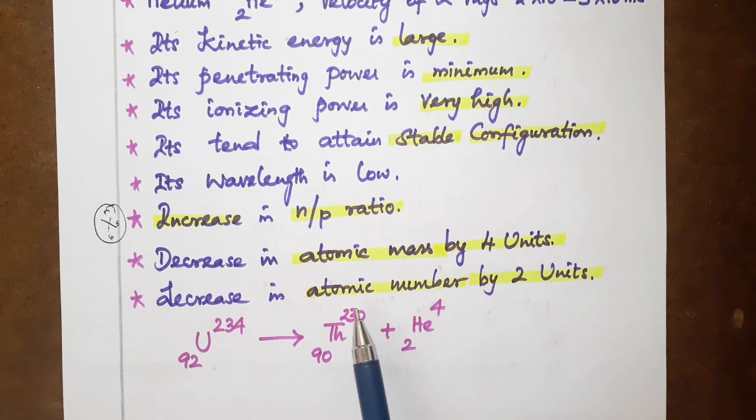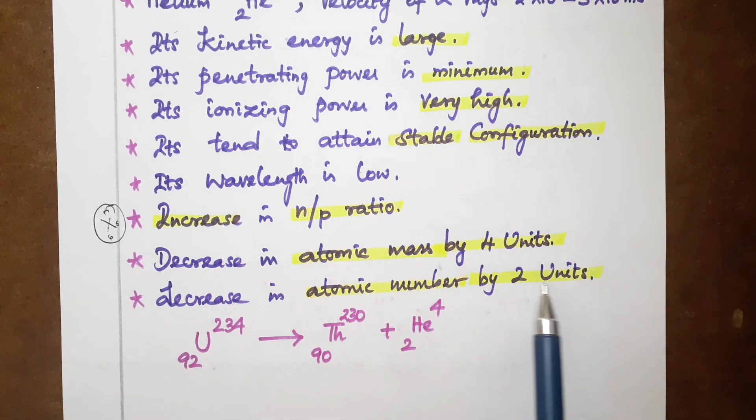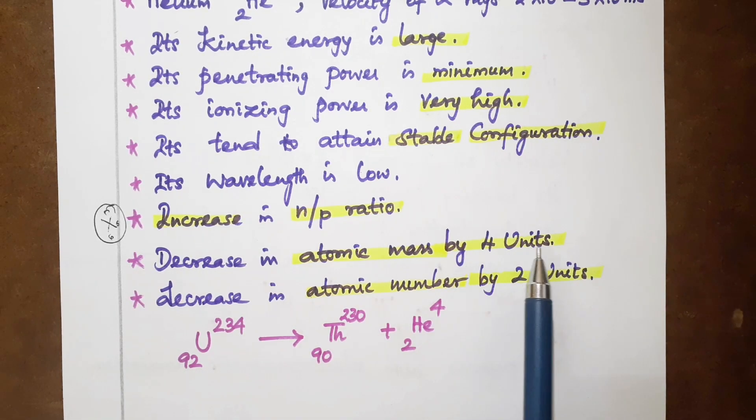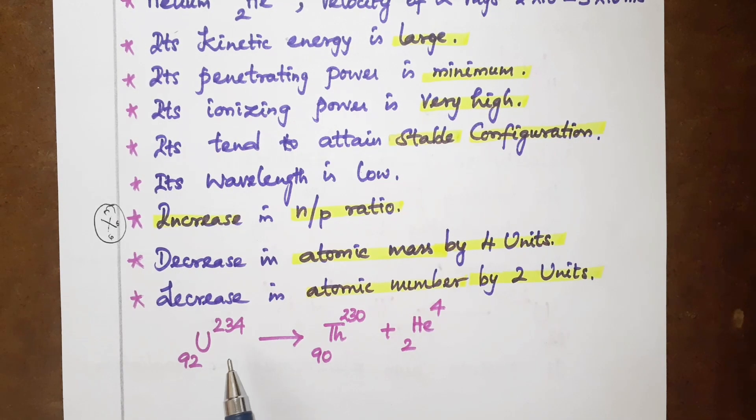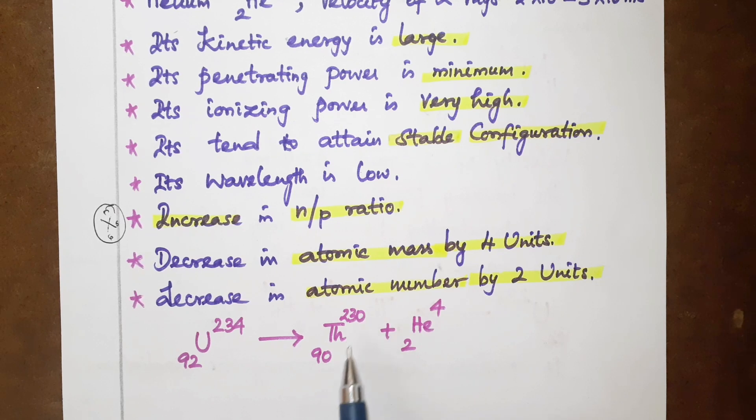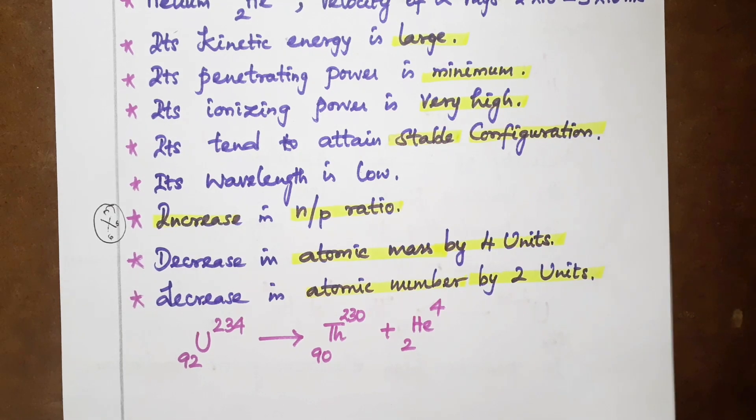Increase in n/p ratio, decrease in atomic mass by 4 units, decrease in atomic number by 2 units. We'll get an example: uranium U-234-92 gives thorium Th-230-90 plus helium He-4-2. This is alpha decay.